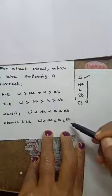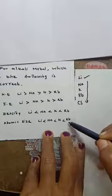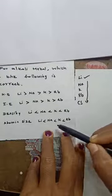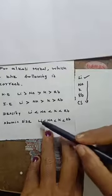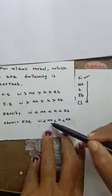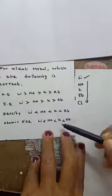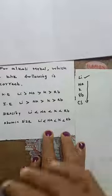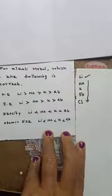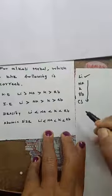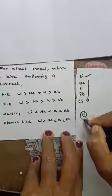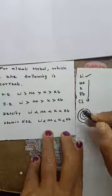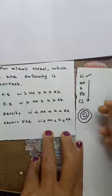Next, see the atomic size. Based on atomic number: lithium is 3, sodium is 11, potassium is 19. Whenever the atomic number increases, the size also increases. So this order is also correct.